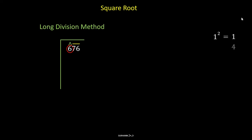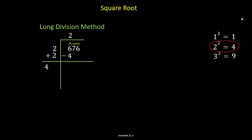Now we start from the left side. There is only one digit, 6. The next step is to find a perfect square equal to or lower than 6. Since 6 is not a perfect square, we choose the perfect square lower than 6. The number 2 is the square root closest to 6, so we write 2 to the left. Then we multiply 2 by itself — the product is 4, which we write below. We also add 2 plus 2 to get 4. We subtract 4 from 6 and get 2.